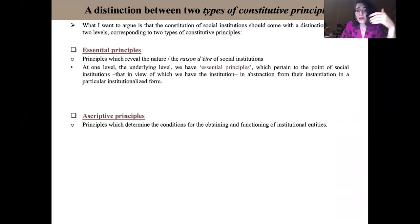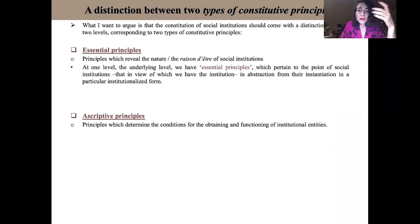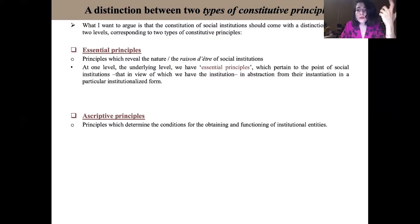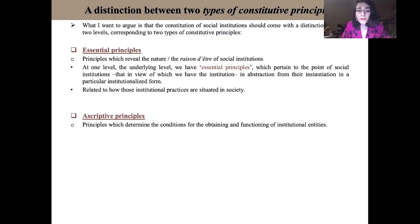At one level, the underlying level, we have essential principles which pertain to the point of social institutions — to that in view of which we have the institution in the first place — in abstraction from their instantiation in a particular institutionalized form. Essential principles pertain to how institutional practices are situated in human societies.